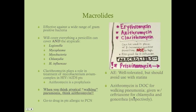Azithromycin is the drug of choice for walking pneumonia. It is also given together with ceftriaxone when a patient is diagnosed with chlamydia or gonorrhea. The azithromycin covers chlamydia and the ceftriaxone covers gonorrhea. Because patients often carry the other infection asymptomatically or there may be misdiagnosis, we treat for both regardless of which one is specifically diagnosed.